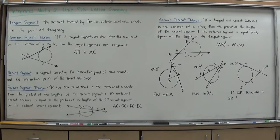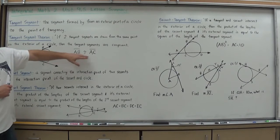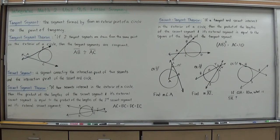The tangent segment theorem is one of our easier theorems today. It states that if two tangent segments are drawn from the same point on the exterior of a circle, then the tangent segments are congruent. So AB is always going to be congruent to AC when you have two tangent segments, two tangent lines intersecting.